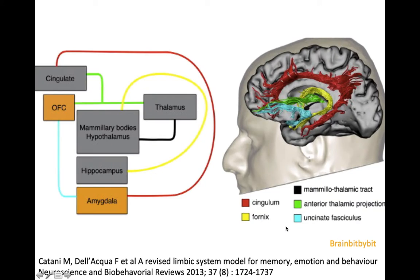The outer arch of the limbic system is formed by the parahippocampal gyrus starting in the uncus of the temporal lobe, continuous with the isthmus of the cingulate, then the cingulate gyrus paralleling the corpus callosum and ending in the sub-callosal area. As previously said, there are many connections between the arches.